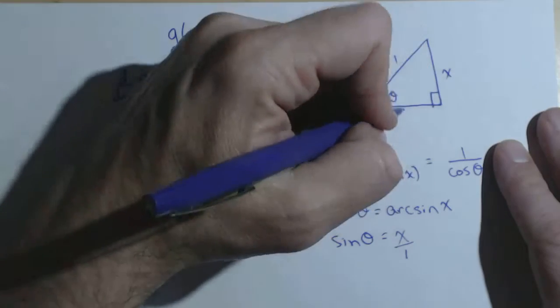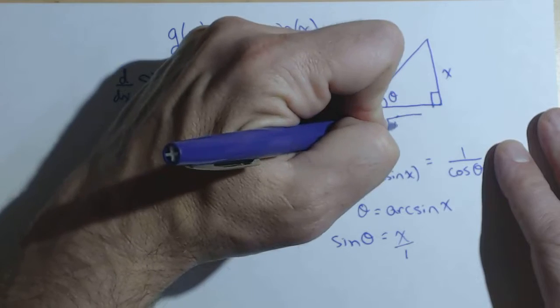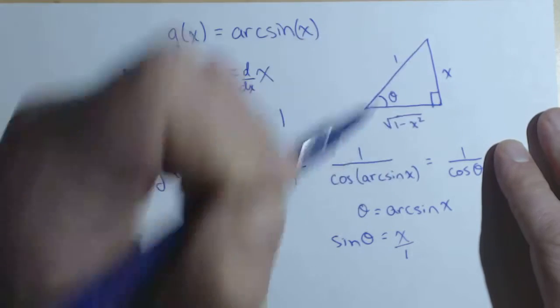Now by the Pythagorean theorem, this side here has to be the square root of one minus x squared.